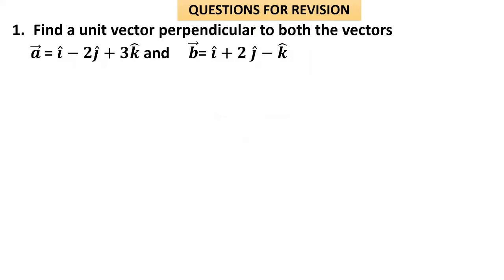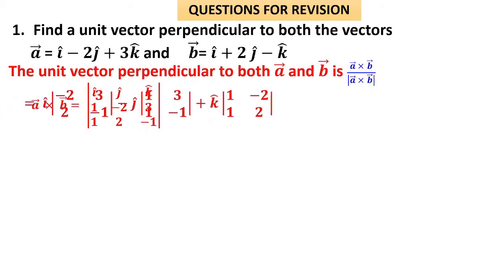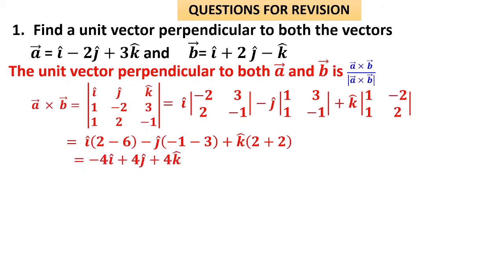Question 1: Find a unit vector perpendicular to both vectors a and b. The unit vector is (a × b) / |a × b|. Computing a × b using the determinant: first row i, j, k; second row 1, −2, 3; third row 1, 2, −1. Expanding gives i(−2·(−1) − 3·2) − j(1·(−1) − 3·1) + k(1·2 − (−2)·1), which yields −4i + 4j + 4k.